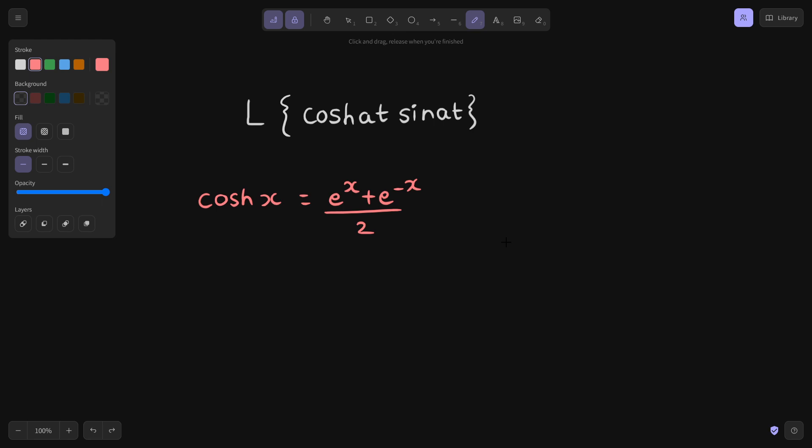But here we have hyperbolic cos of x so we are writing plus in the middle. Now in place of x we have at, so we can write hyperbolic cos of at should be equal to e power at plus e power minus at divided by 2.